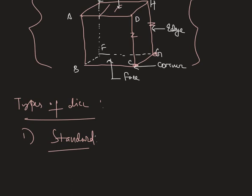The standard die is called when the sum of digits or dots on opposite faces is equal to seven.